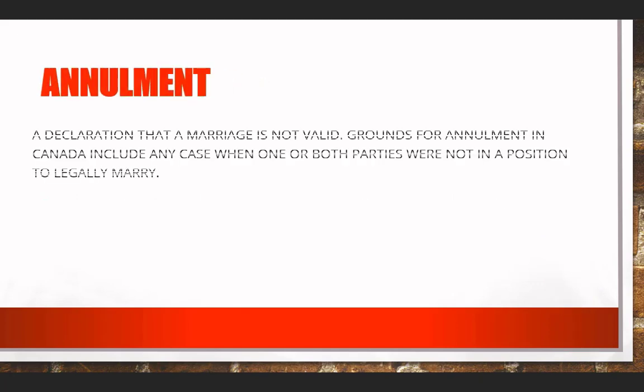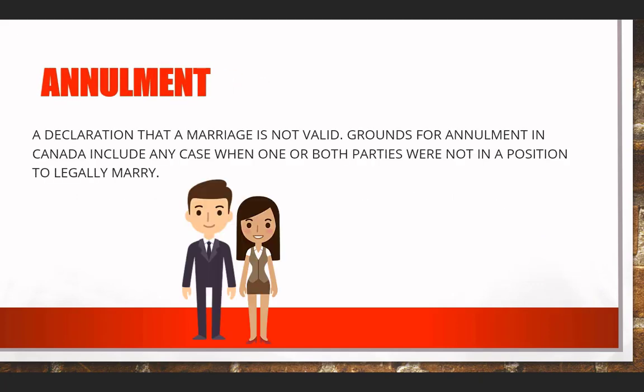Annulment: a declaration that a marriage is not valid. Grounds for annulment in Canada include any case when one or both parties were not in a position to legally marry.